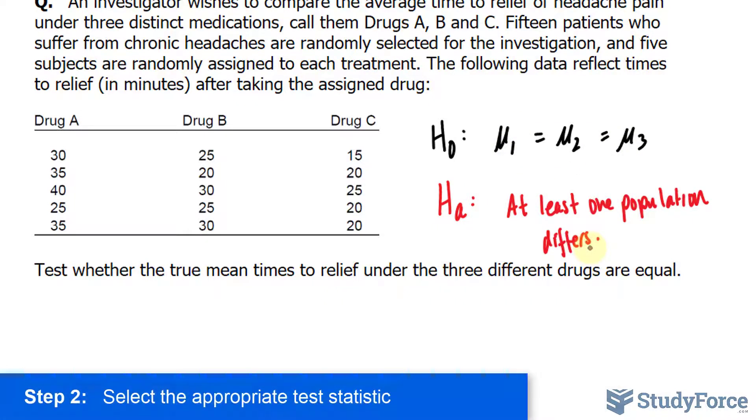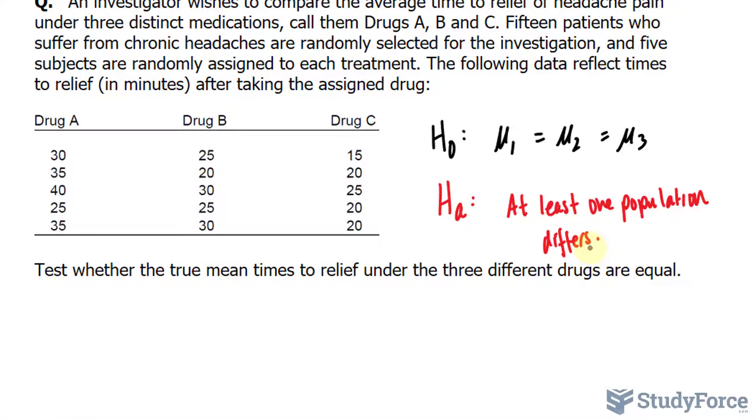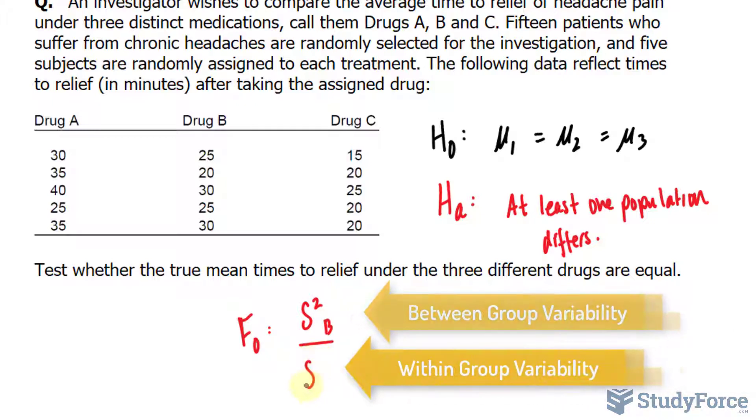The second step is to select the appropriate test statistic. What we're looking to find is the value of F observed, and as the name suggests, it follows the F distribution pattern. F observed is a ratio that compares between group variability to within group variability. Finding these two quantities requires that you know how to find the sum of squares and degrees of freedom for within and between the groups.